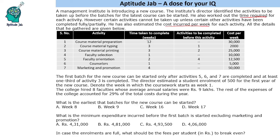Looking at the table, this column shows the time taken to complete in weeks, and this is the cost per week. It also lists activities to be completed before each activity. For activity 2, you need to complete activity 1 first — only then can it start. Similarly, in order to complete activity 3, you need to complete activity 2. In order to complete activity 5, you need to complete activity 4. Others are independent activities.